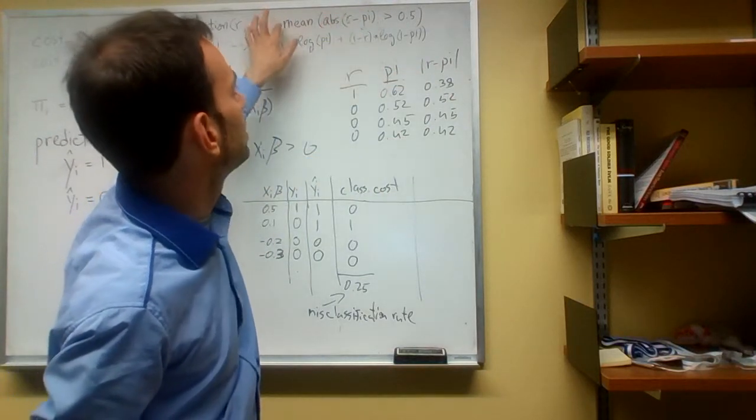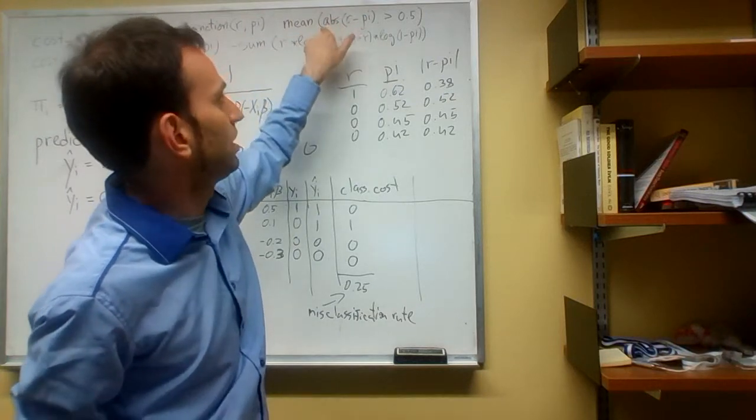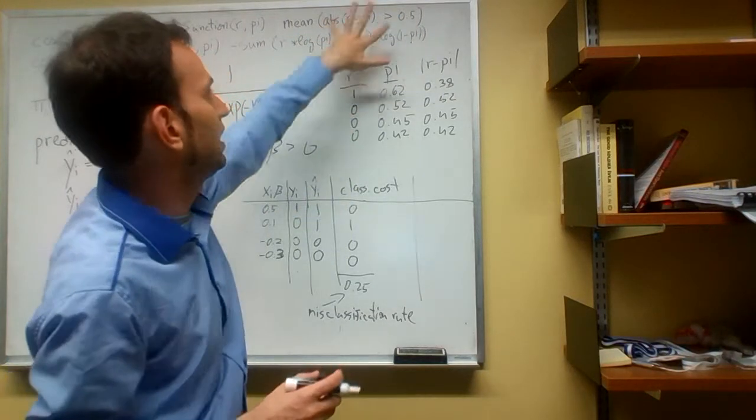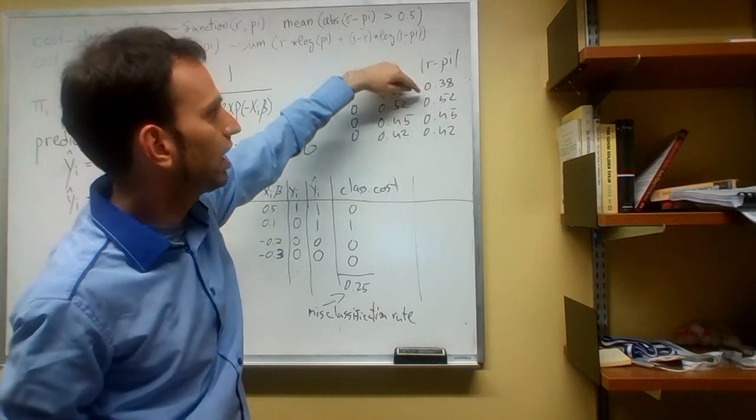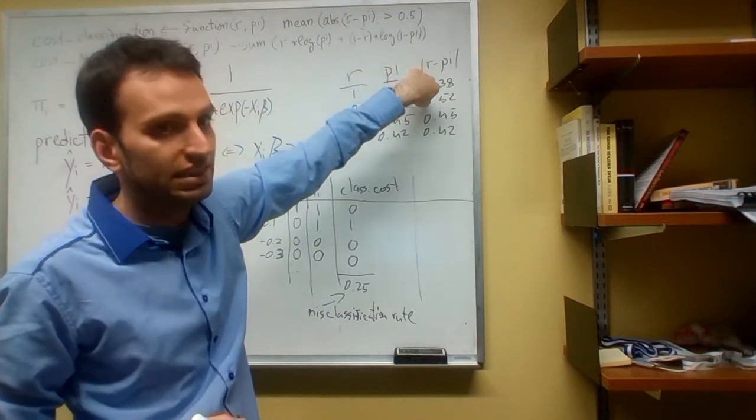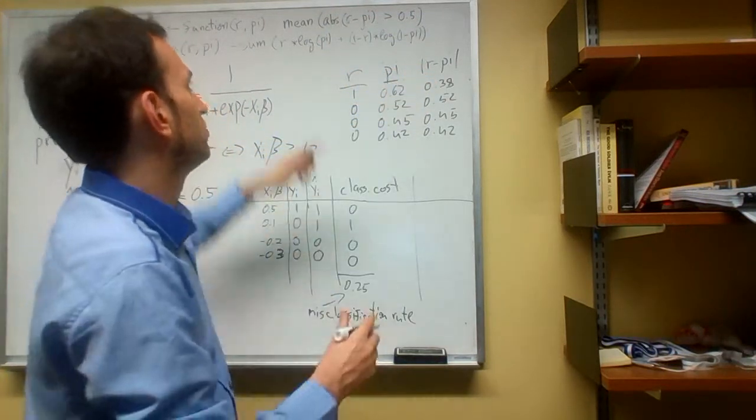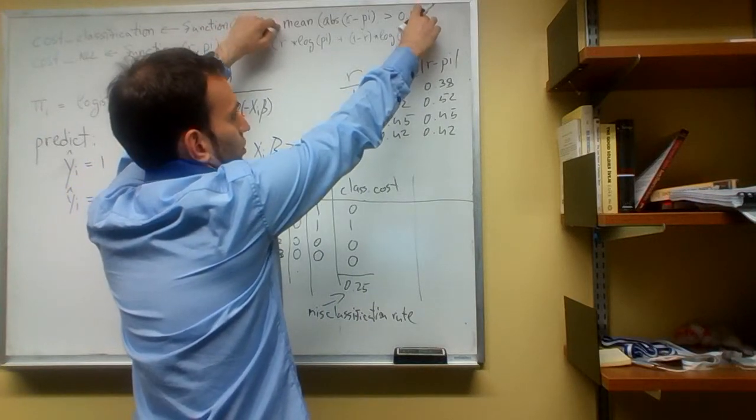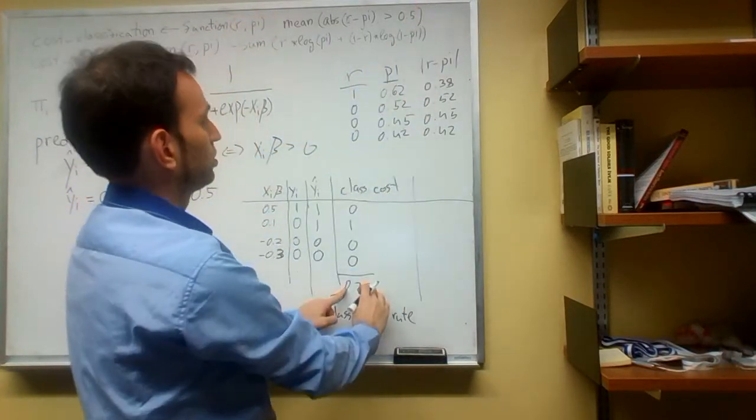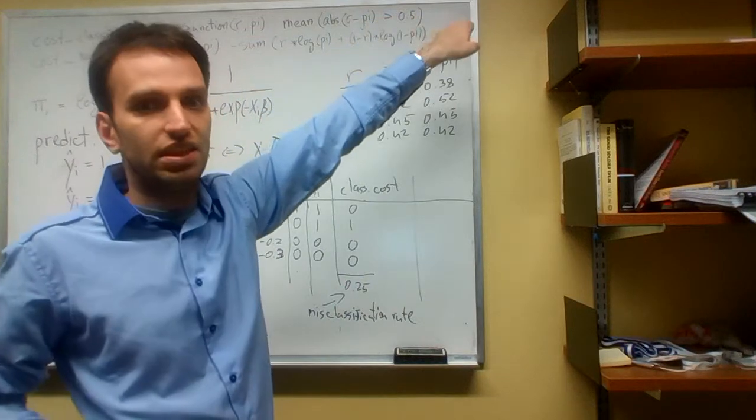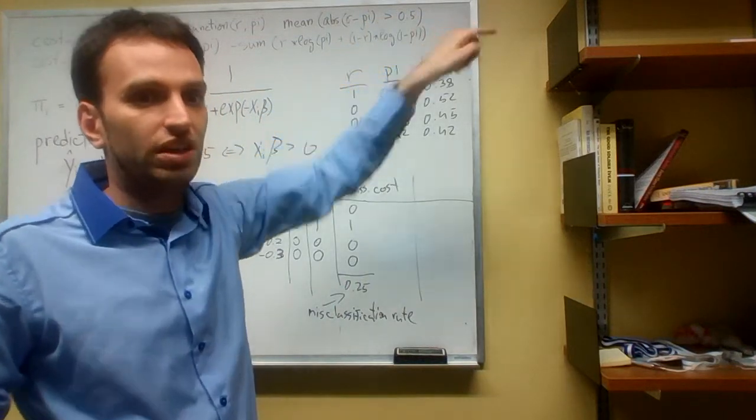Now, what do we do? We say, on average, is this greater than 0.5, and it's going to be greater than 0.5 in exactly one case, which is how the value of this function is just going to be, again, 0.25. This is the misclassification cost.